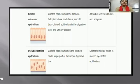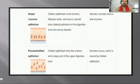Simple columnar epithelium includes a ciliated form present in the bronchi, fallopian tube, and uterus, and a smooth form in the digestive tract and urinary tract. Its main function is absorption, and it also secretes mucus and enzymes.